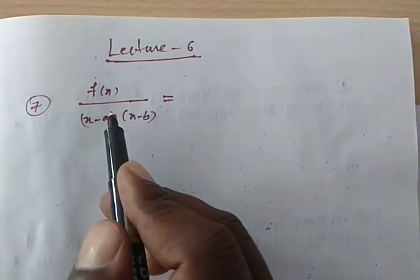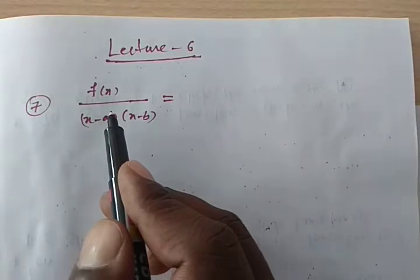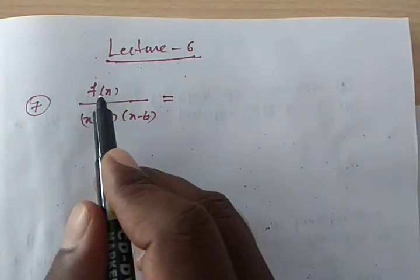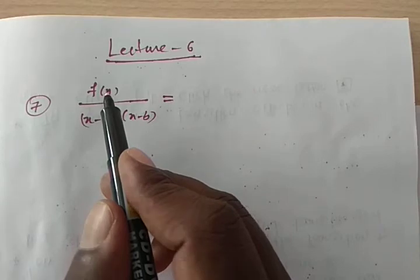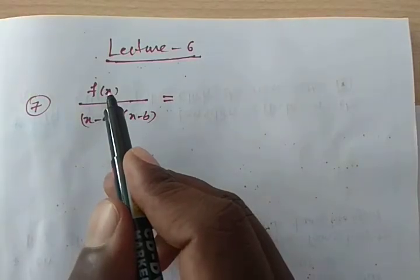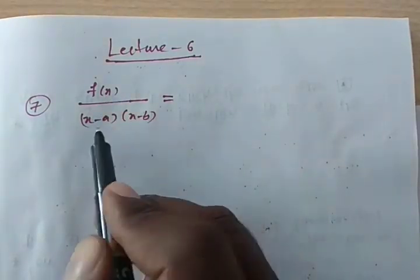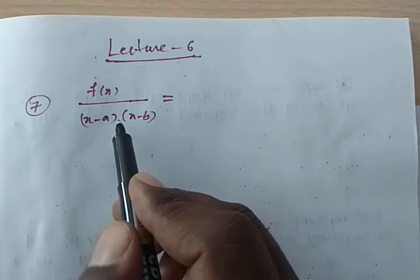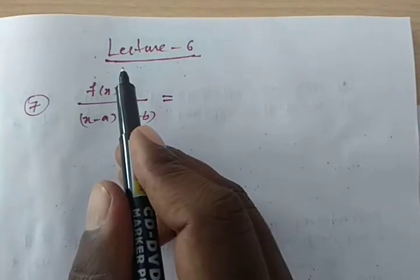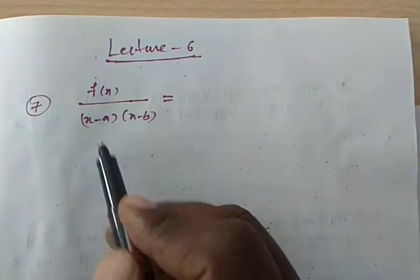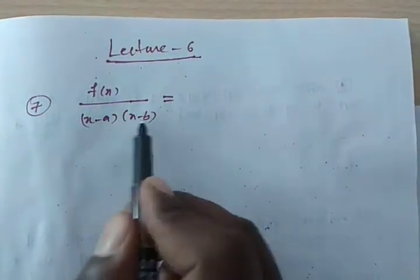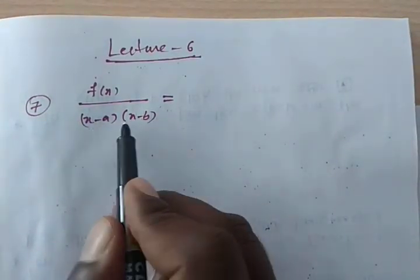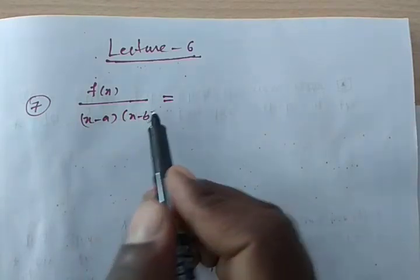A Type 1 problem involves a proper fraction. f(x) may be first degree or less — that is, a constant — because the denominator is second degree, and the numerator degree must be less than the denominator degree. Clearly, the denominator contains a product of two distinct linear polynomials.